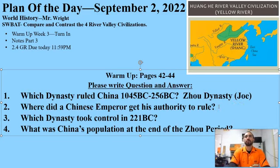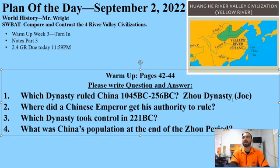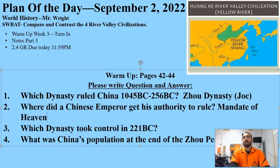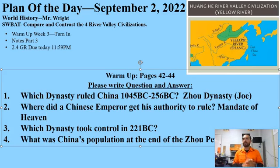Number two, where did a Chinese emperor get his authority to rule? The Chinese believed in the dynastic cycle and that dynasties rose and fell based on the mandate of heaven. An emperor who is ruling had the mandate of heaven. When an emperor was overthrown, then obviously they've lost the mandate of heaven.